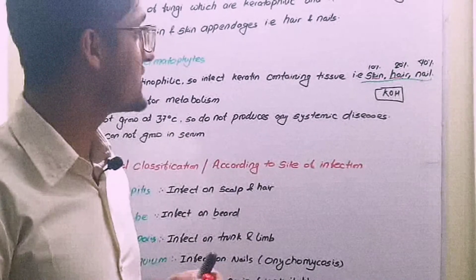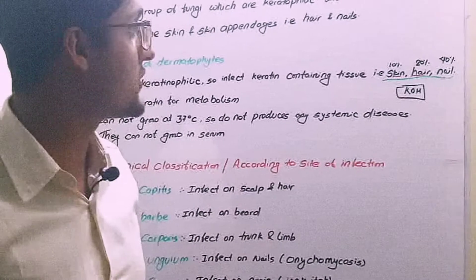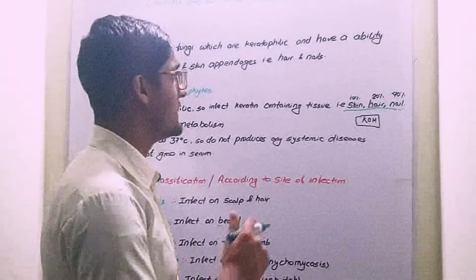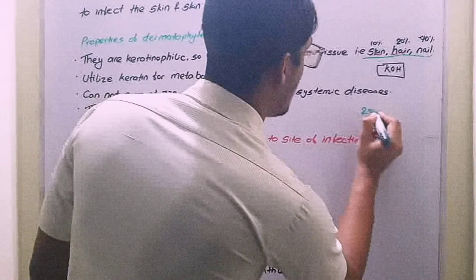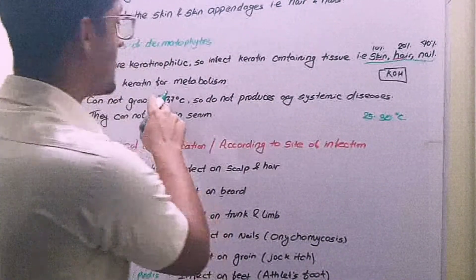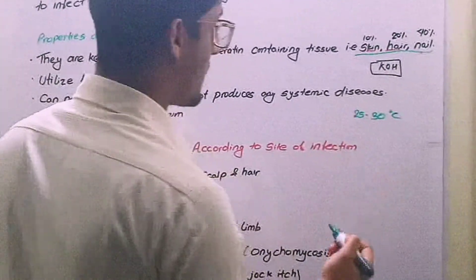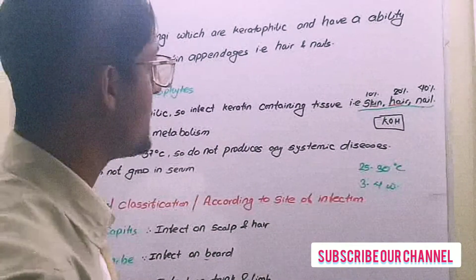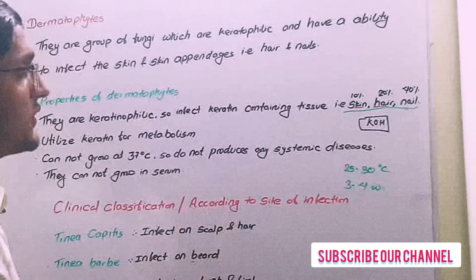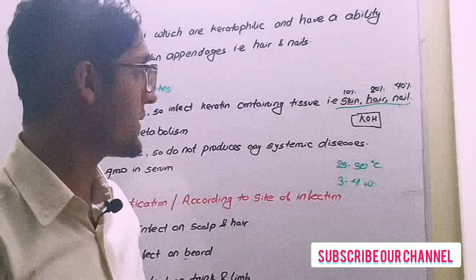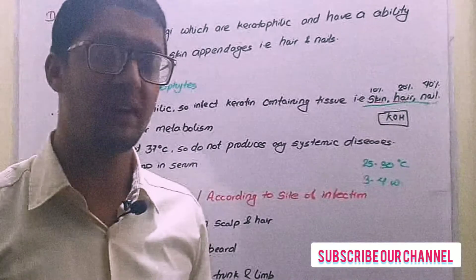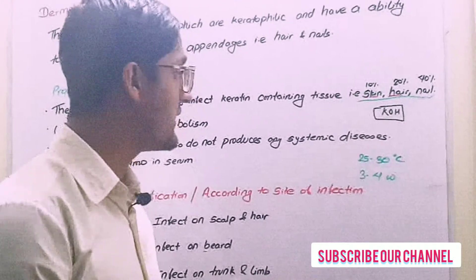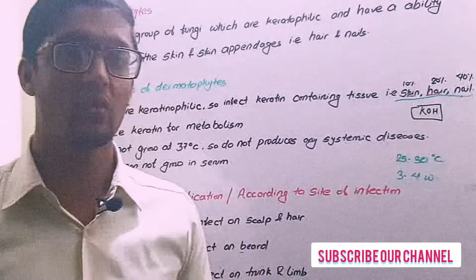Isolation and identification is done on Sabouraud's dextrose agar media, which is a culture media for fungal agents. We culture at a temperature of 25 to 30 degrees Celsius because they cannot grow at 37 degrees Celsius, for 3 to 4 weeks. There are two findings: macroscopic finding and microscopic finding. In macroscopic finding we find red, green, white, or violet colony appearance, and in microscopic finding we find macroconidia and microconidia.